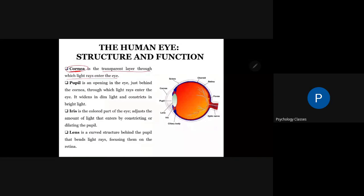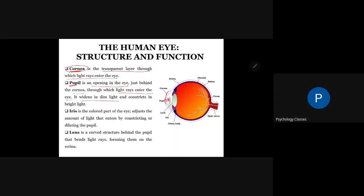Then, we have the next structure that is the pupil. Pupil is an opening in the eye just behind the cornea through which light rays enter the eye. So after the cornea, this is our opening which we call the pupil. So from the cornea, we go into the pupil.